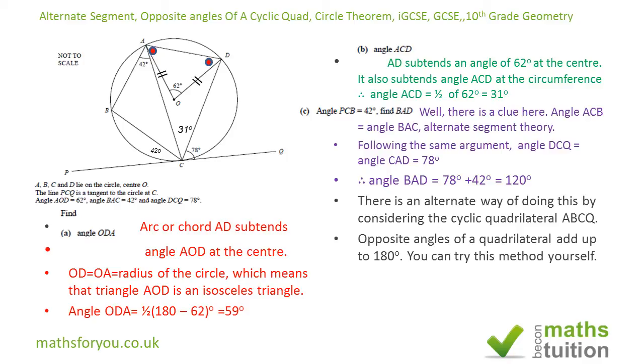The opposite angles of a cyclic quadrilateral, this one plus this one, add up to 180. So 29 plus 31 gives us 60, which means that this angle has got to be 180 minus 60, and we get an angle of 120 degrees. Thank you for watching and please subscribe.